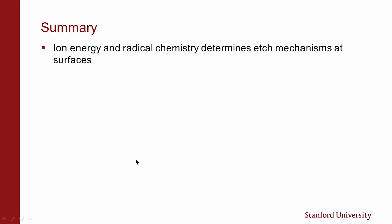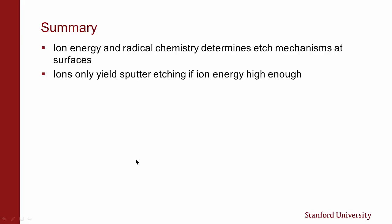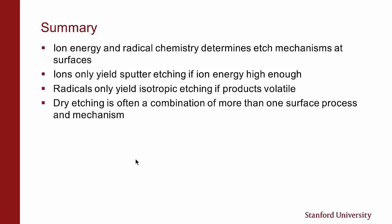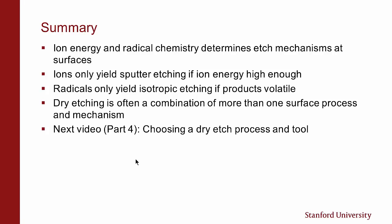In summary: ion energy and radical chemistry determine etch mechanisms at the surface. Ions alone produce anisotropic etching if ion energies are high enough. Radicals alone lead to isotropic etching if volatile products are formed. Dry etching is often a combination of more than one surface process — it can be ion-driven and deposition combinations. In the next video presentation, I'll talk about choosing a dry etching process and tool. Thank you.